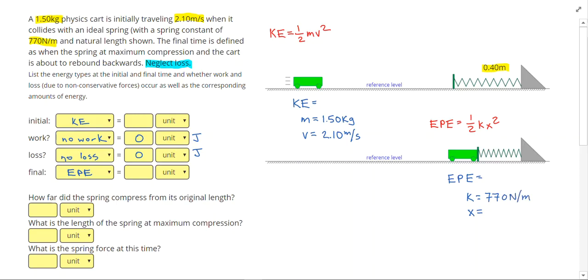So we know two of the things in the kinetic energy equation so we can go ahead and solve for the kinetic energy. So I plugged in one half times 1.5 times 2.1 squared. And I got a total of 3.31 joules for the kinetic energy. Which is our first answer over here.